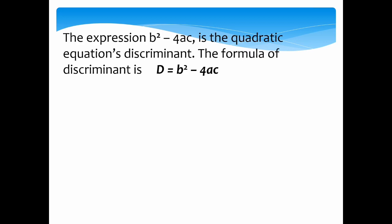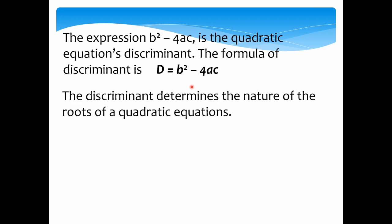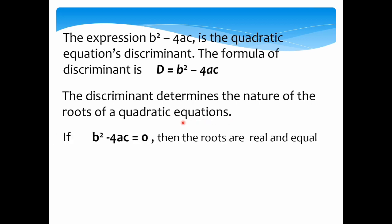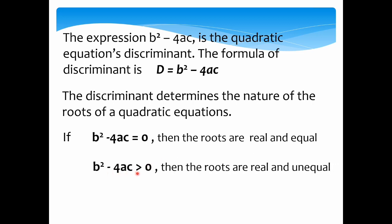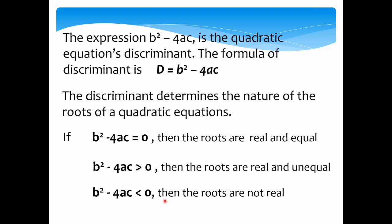The expression b squared minus 4ac is the quadratic equation's discriminant. We are given the formula d is equal to b squared minus 4ac. The discriminant determines the nature of the roots of the quadratic equation. If b squared minus 4ac equals 0, the roots are real and equal. If greater than 0, the roots are real and unequal. If less than 0, the roots are not real.